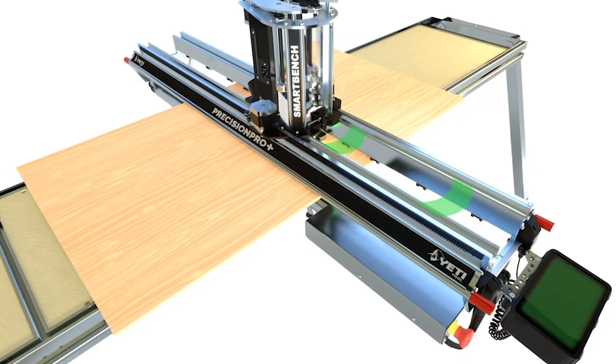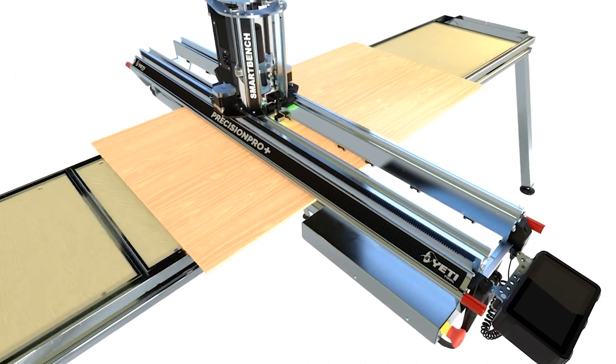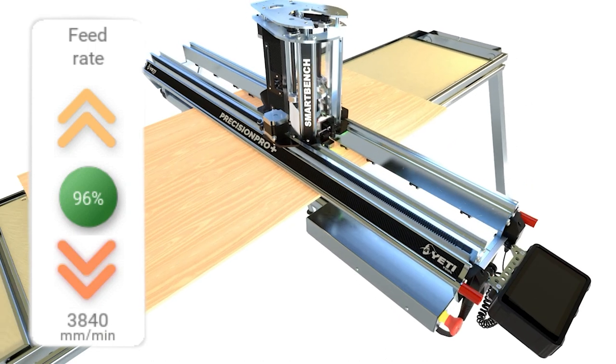If it sees that the spindle is under low load then it can speed up, but similarly if it sees that the spindle is under high load then it can slow the job down.